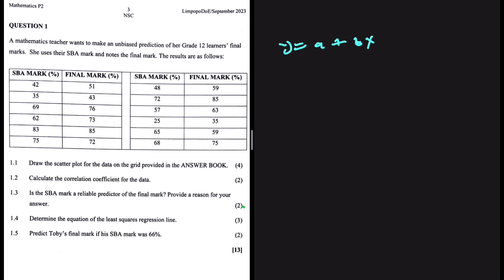Let me brief you on our problem statement. A mathematics teacher wants to make an unbiased prediction of her Grade 12 learner's final marks. She uses the SBA mark and knows the final mark. The results are as follows. So this is the x values and this is the y. We're using the SBA mark to predict the final mark.